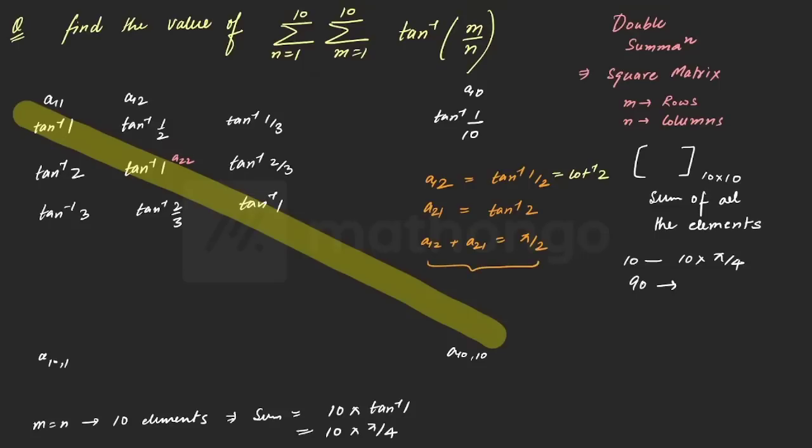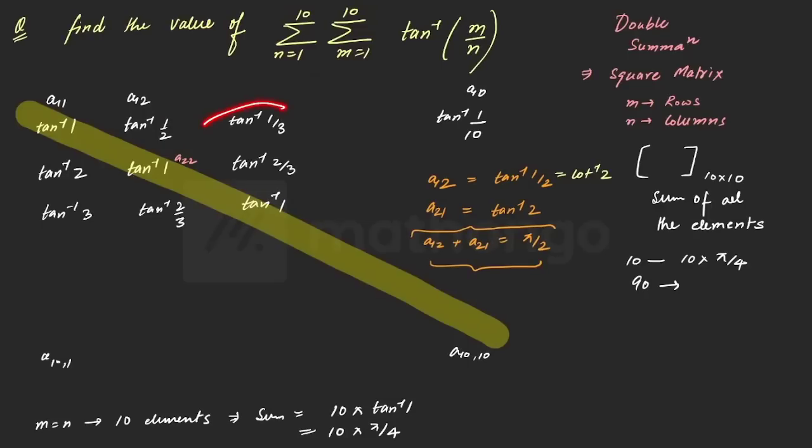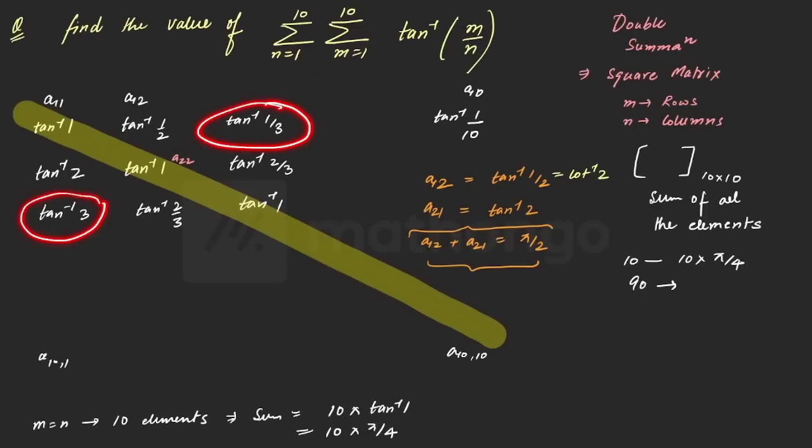And how many such pairs we can form? By transpose pairs: 1,2 and 2,1. So similarly, you can very easily see 1,3 and 3,1; 1,4 and 4,1. Or let's say you have this, what is this element? This is 2,3. So this will be paired with 3,2. So that means you can see that I have written this wrong.